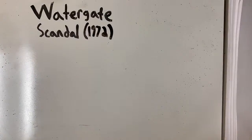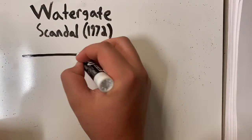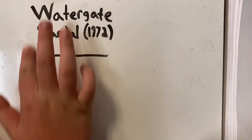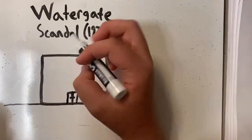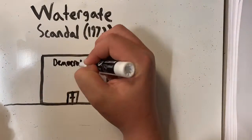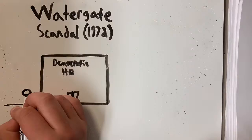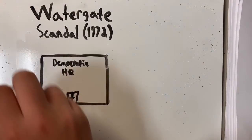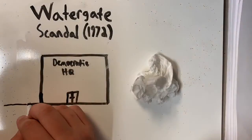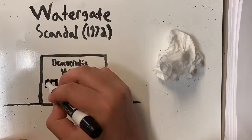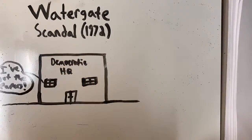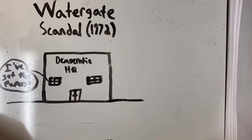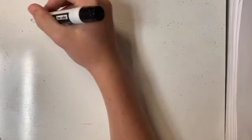The Watergate scandal in 1972 was a major end to Nixon's career as president and soon led to him resigning from the job before he got removed from office. It was his cover-up of the scandal that led to his departure. It was also led by the re-elect Nixon party, which was a group of radicalists.